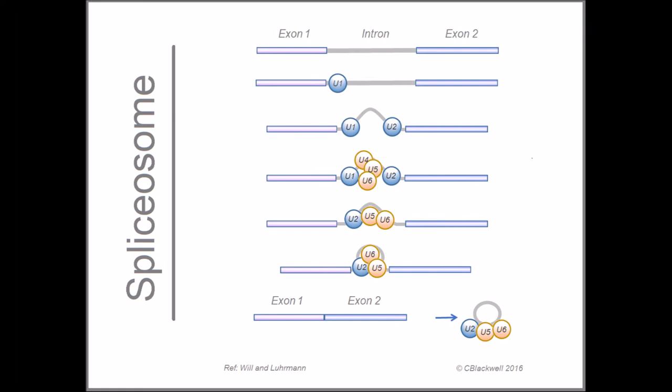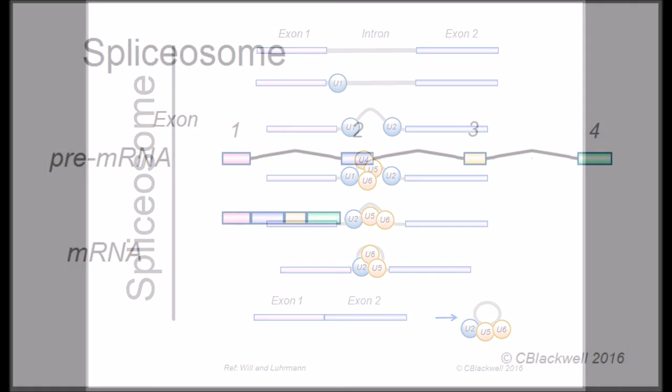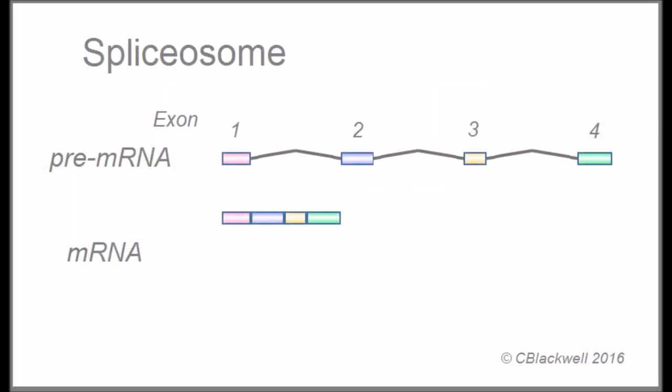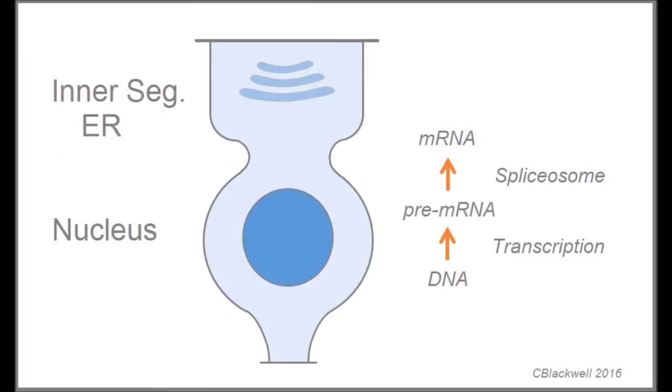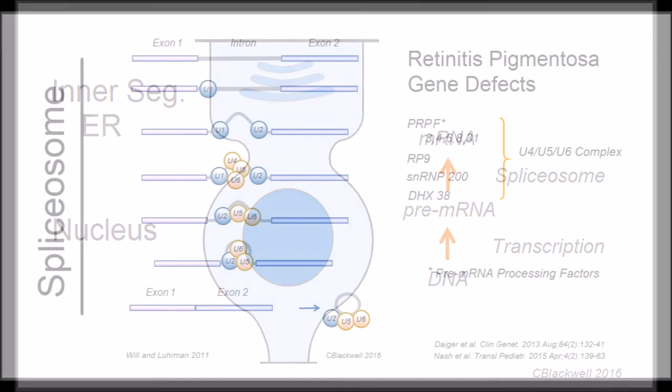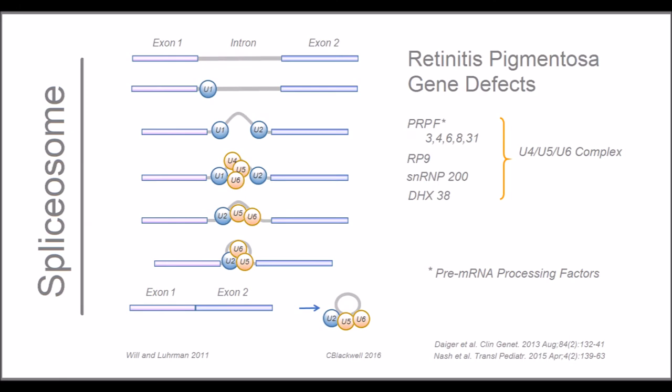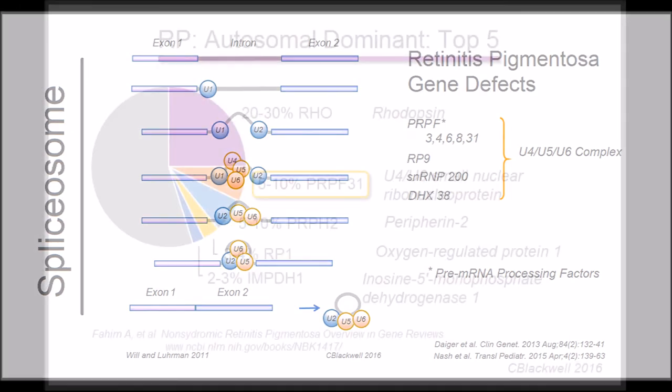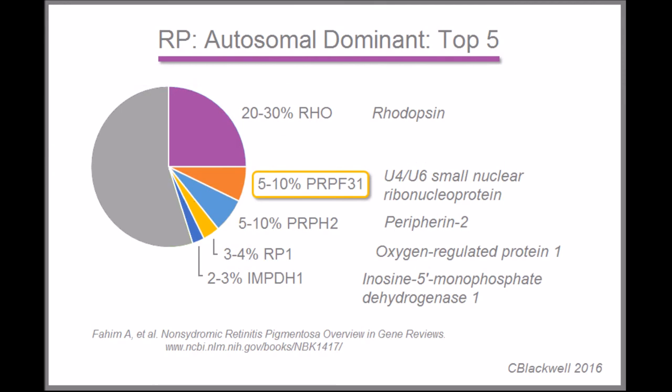The spliceosome is important to mention for two reasons. One is that it allows the eukaryotic cell to combine a small number of gene segments, called exons, into multiple combinations, allowing for a diversity of finished proteins from a smaller number of basic building blocks. The second reason is that an estimated 20% of all genetic disorders relate to defects in spliceosome function. For retinitis pigmentosa, those defects are the second most common cause of autosomal dominant RP, second only to mutations in rhodopsin.